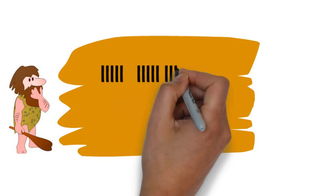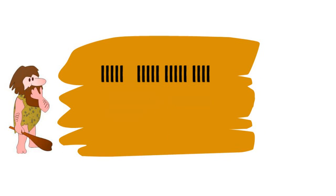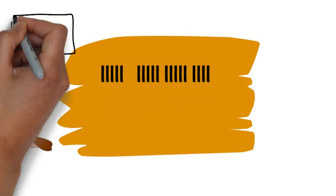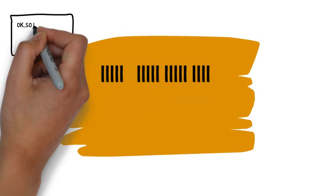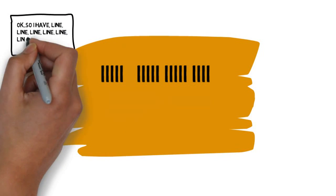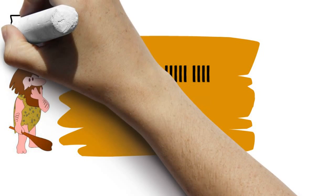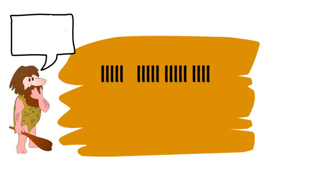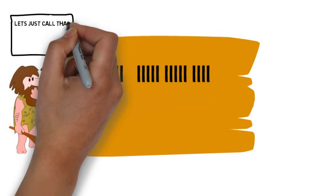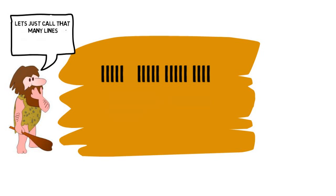To handle this, you might keep a record of these lines inside your cave or hut. But to do this, you need to give names to specific quantities of lines, so you start developing numbers. Now you have a concept of 20 being different from 19. This way, you can count lines, then go out and count carrots, and see if they match.